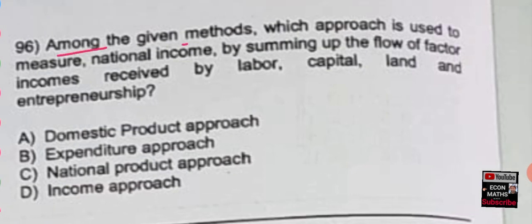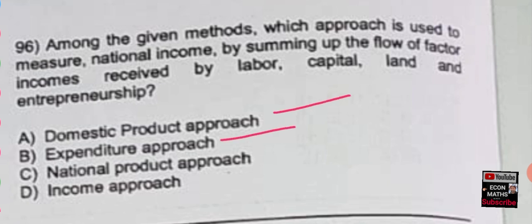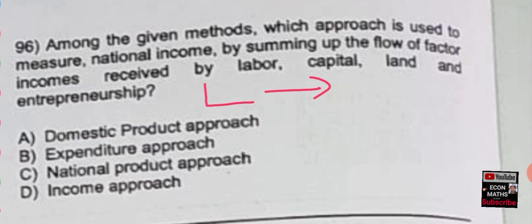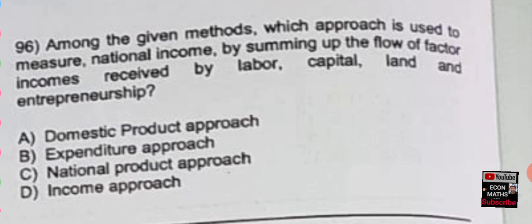The next question: which approach is used to measure national income by summing up the flow of factor income received by labor, capital, land, and entrepreneurship? The options are domestic product approach, expenditure approach, national product approach, or income approach. The correct option is the income approach, which calculates income earned by all factors of production — land receives rent, capital receives interest and profits.